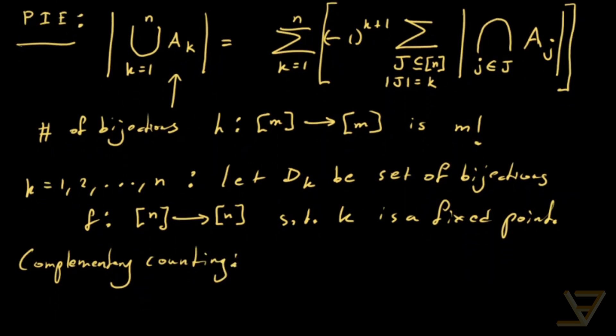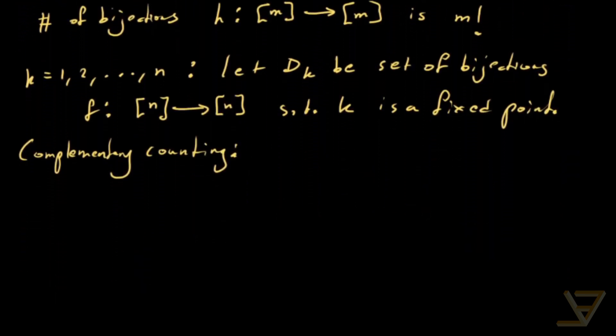So what we're really looking for is the total number of bijections which is n factorial minus the union of the possibilities of fixed points. So we do k equals 1 through n iterating over the D_k's. So that's what we're looking for.